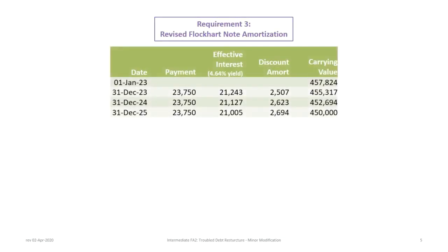For the amortization table, we start with the existing carrying value of $457,824, keep payments at $23,750, but the yield rate changes from seven percent to 4.64%. Taking $457,824 times 4.64% gives interest of $21,243. The difference between the interest expense and the payment gives a discount amortization of $2,507. This steps the carrying value down from $457,824 to $450,000 over three periods — that is the revised amortization table.